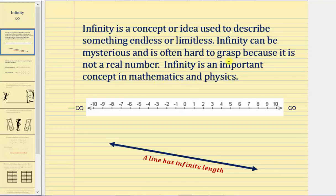We know we can plot real numbers on the number line, but the idea for positive infinity is if you were to move right along the number line in this direction, you would be approaching positive infinity, but you would never reach positive infinity. As soon as you thought you might be close, it's going to be further to the right.